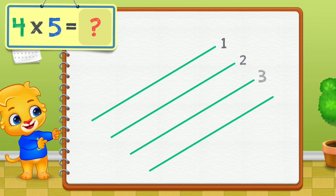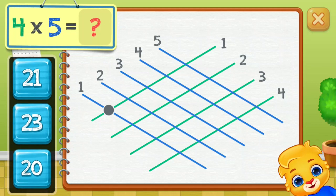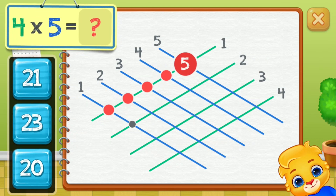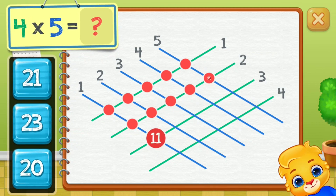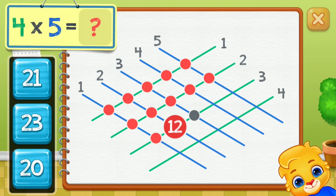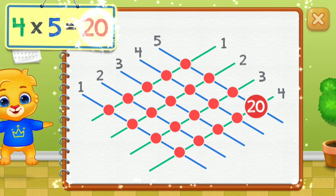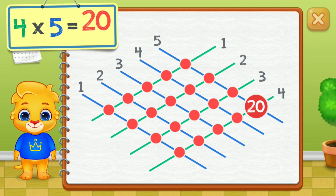Four times five equals... One, two, three, four, five, six, seven, eight, nine, ten, eleven, twelve, thirteen, fourteen, fifteen, sixteen, seventeen, eighteen, nineteen, twenty. Four times five equals twenty.